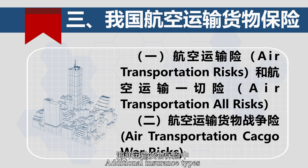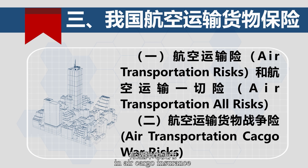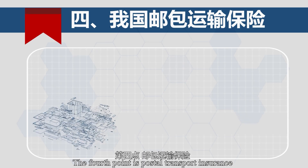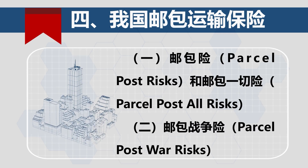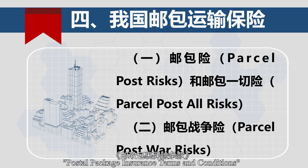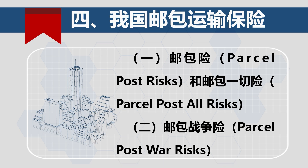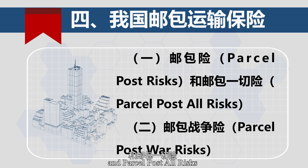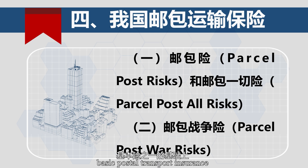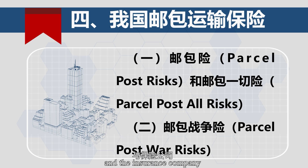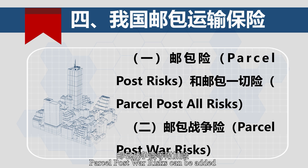Additional insurance types in marine cargo insurance can also be selectively used in air cargo insurance. The fourth point is postal transport insurance. According to the postal package insurance terms and conditions in China, there are two basic types: postal transport insurance and postal all-risk insurance. In addition to one of the basic postal transport insurances, through negotiation between the policyholder and the insurance company, additional insurance such as postal war risk can be added.